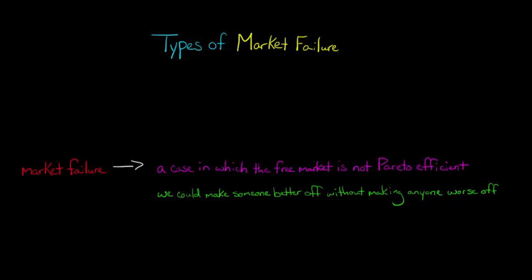In this video, we're going to discuss several different types of market failure. So first off, a market failure is a case when the free market, just left to operate on its own, is going to produce an allocation of goods and resources that is not Pareto efficient.